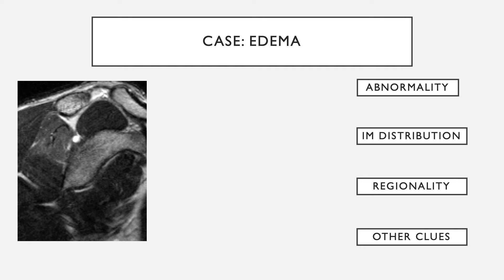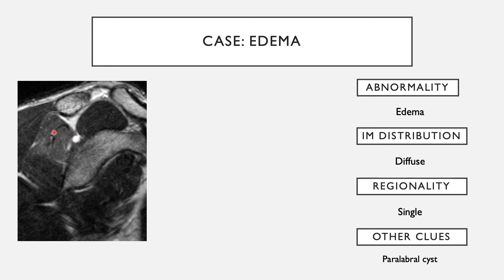In this shoulder case, the primary abnormality is edema. The infraspinatus muscle is clearly more hyperintense than the remaining muscles — supraspinatus, teres minor, and subscapularis. There is also a small paralabral cyst sitting in the spinoglenoid notch. The suprascapular nerve traverses through the spinoglenoid notch after giving a branch to the supraspinatus nerve. Therefore, compression by this cyst affects only the infraspinatus innervation, producing denervation-related edematous changes within that infraspinatus muscle.